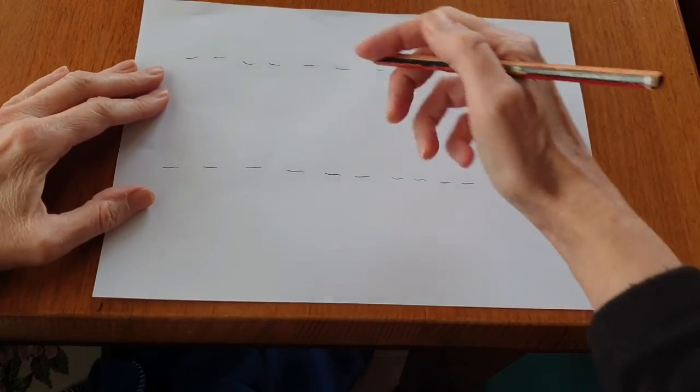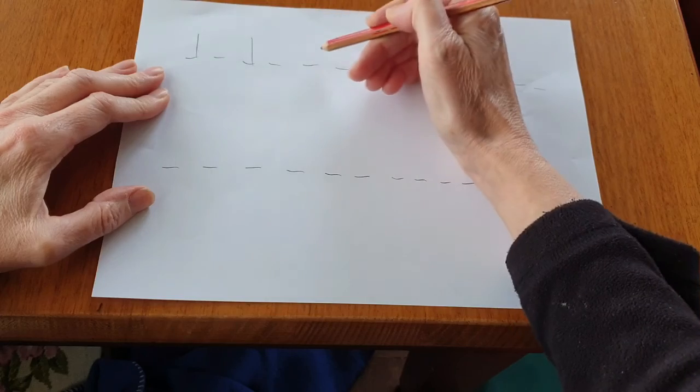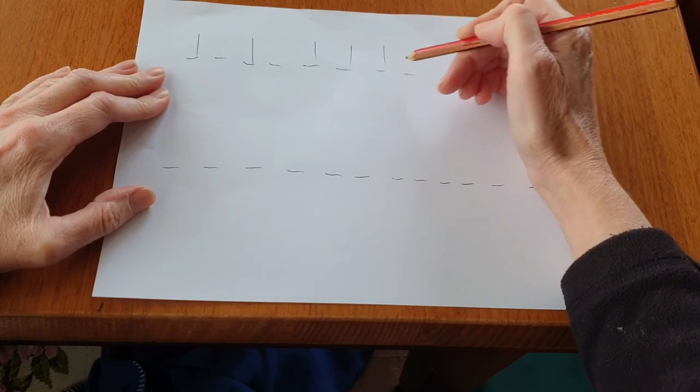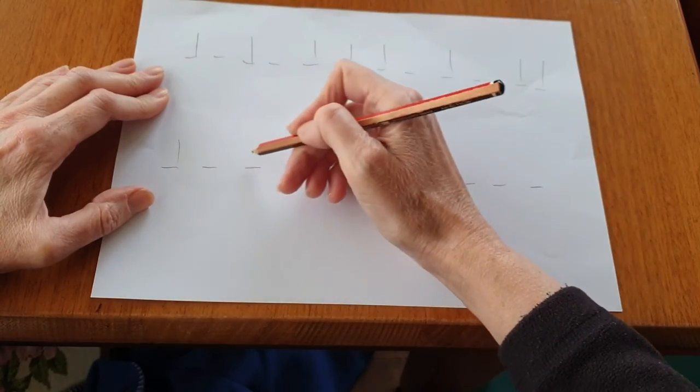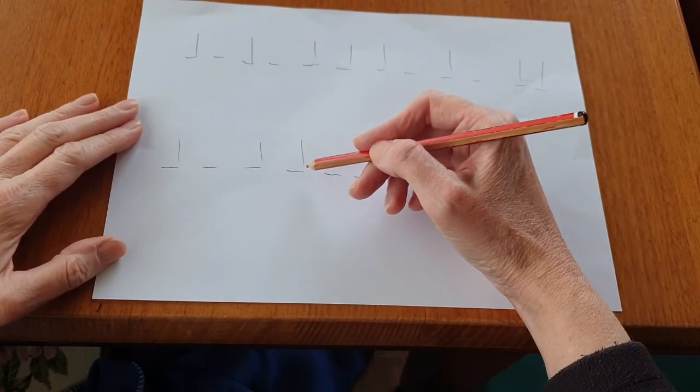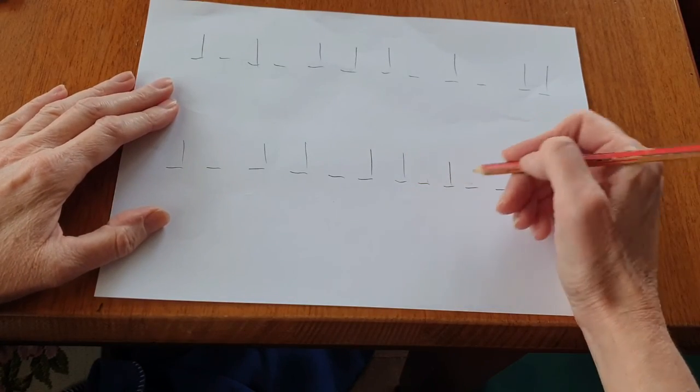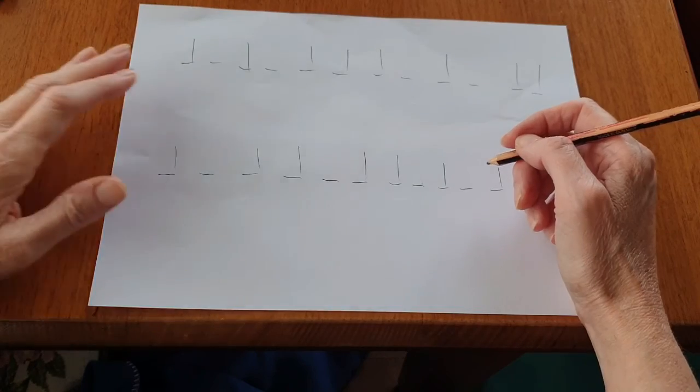Now put stems on the main beats. One, two, three, four, five, six, seven, eight, nine, ten, eleven, twelve, thirteen, fourteen, fifteen, sixteen, seventeen, eighteen, nineteen, twenty, twenty-one, twenty-two, twenty-three, twenty-four.